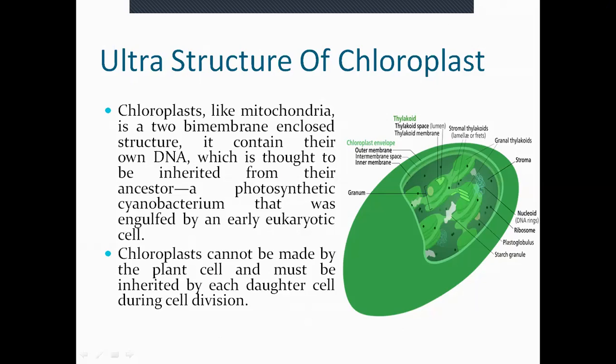Inside the inner chamber, the chloroplast contains its own DNA and several different membranous structures known as thylakoids. Along with that, since it has its own DNA, it must also have ribosomes so that it can express the DNA inside. So chloroplasts have their own ribosomes as well.